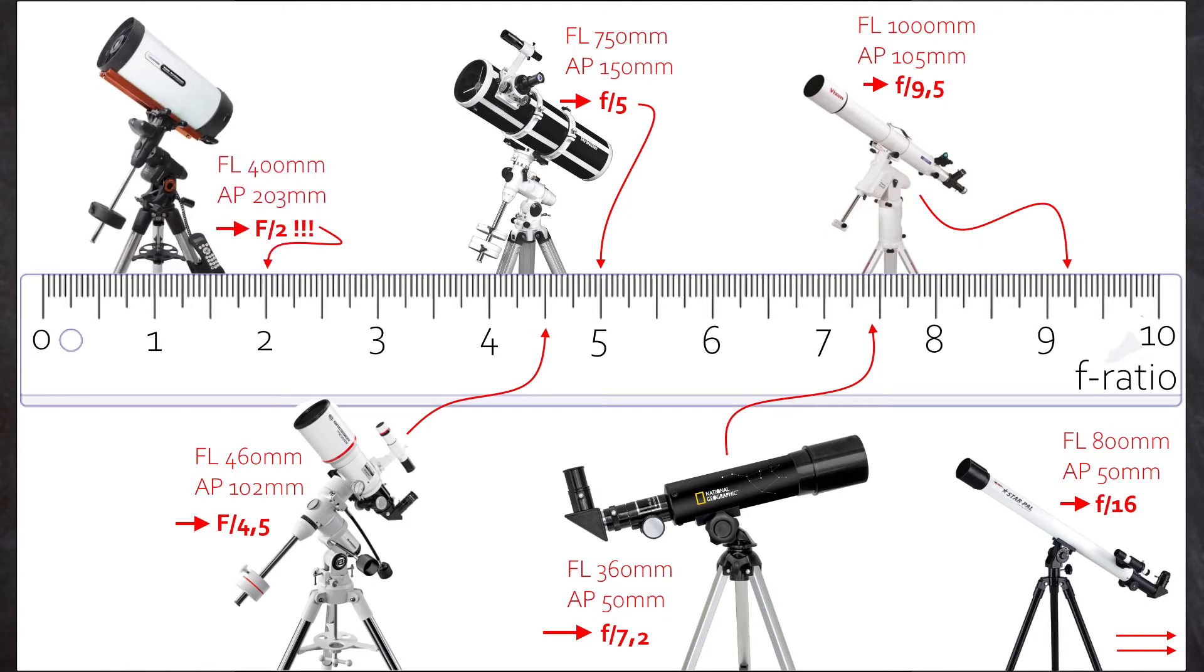And then we end the line with the incredible Rasa from Celestron. It has a focal length of only 400mm but still an aperture of over 200mm, so more than half of the focal length. That gives the Rasa an incredible view on a big chunk of the sky while collecting as much light as possible. The f-ratio is down to f2.